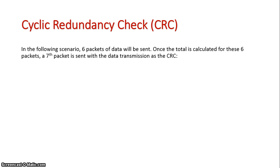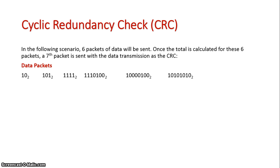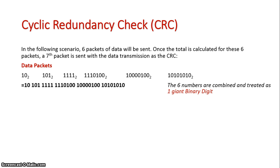Now let's take a look at an example. We're going to send six packets of data and the CRC will be sent along with it. Here are our six packets in binary form. Unlike a checksum, we are not going to add each individual packet together. Instead, we're going to combine them into one big packet — one giant binary digit — which gives us one giant decimal number.